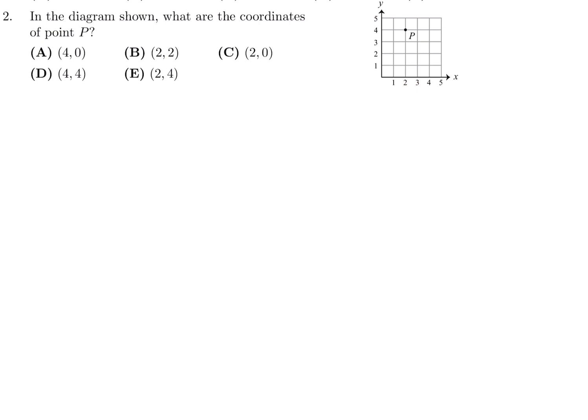In the diagram shown, what are the coordinates of P? So we've gone 2 across and we've gone 4 up. 2 across and 4 up is the point (2,4). Number 2, that would be E.